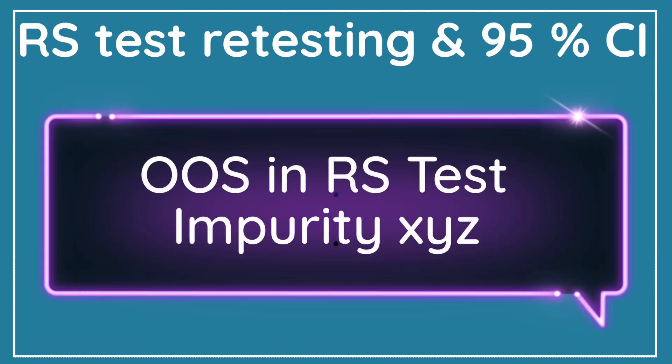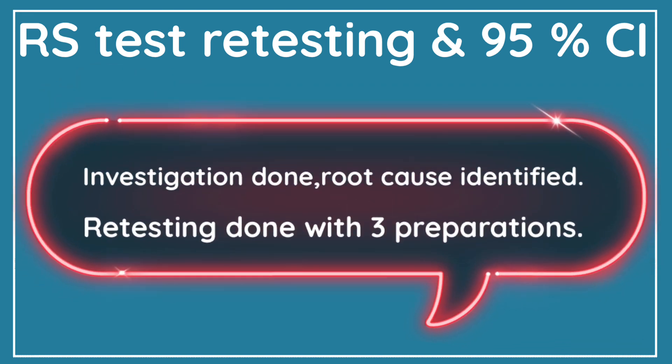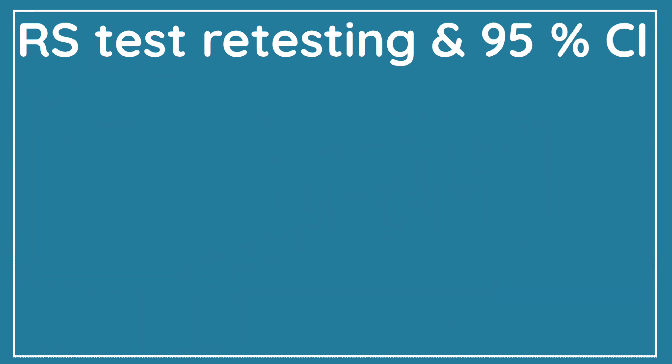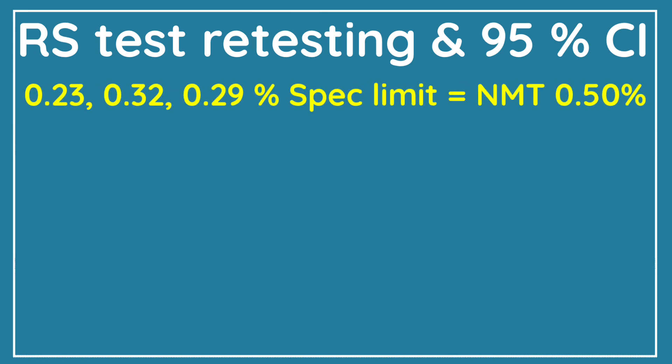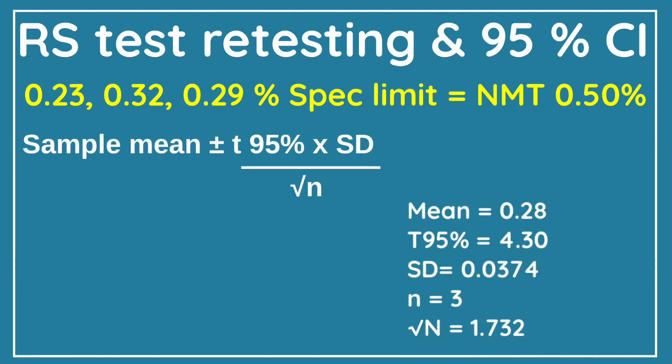Now let us see the related substances test. Suppose there was an OOS result in the RS test for impurity XYZ. After investigation, the root cause was identified and retesting was proposed with three preparations. After retesting, the results of the three preparations are 0.23%, 0.32%, and 0.29%. The specification limit for impurity XYZ is not more than 0.50%. We have to check whether all three results meet the 95% confidence interval limit.